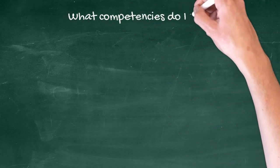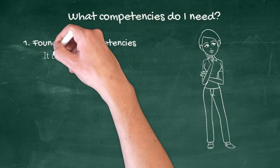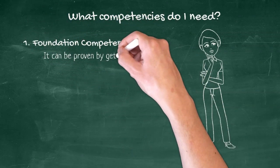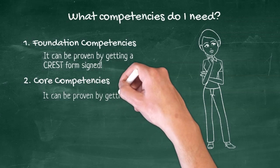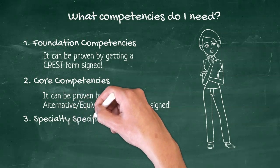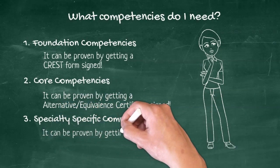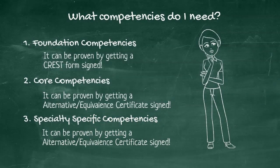What competencies do you need? As a doctor to work in the UK there are several steps. The first step is foundation competencies, which can be proven by getting a CREST form signed or joining foundation training. There are core competencies which can be gained by joining a core training program or getting an alternative or equivalent certificate signed. There are also specialty-specific competencies where core training is not separate, like pediatrics, obstetrics, and gynae.